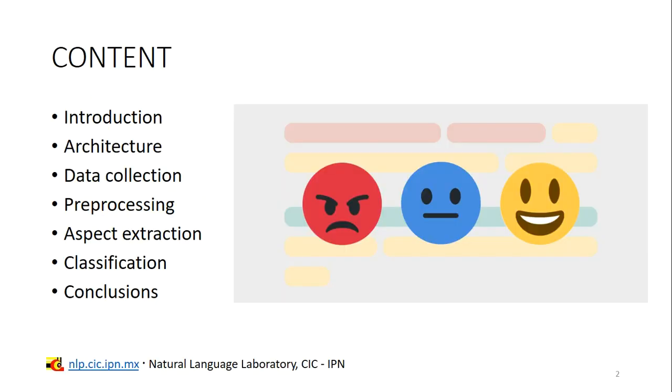The outline of the presentation consists of the following parts. We will start with the introduction and explanation about what is sentiment analysis. Then we will review the architecture proposed for this work. After that, we will explore how to get or construct our data collection. We will look at several techniques for preprocessing text, then review the steps to obtain aspects in a text and different techniques for classification, and finally, the conclusion of this work.